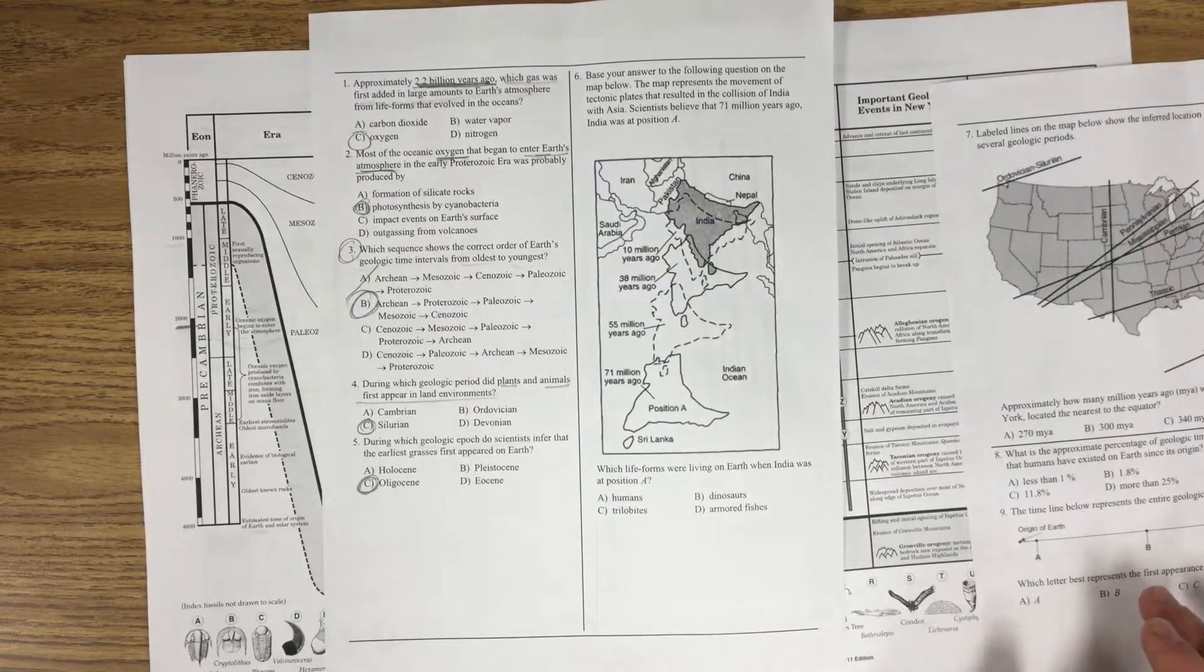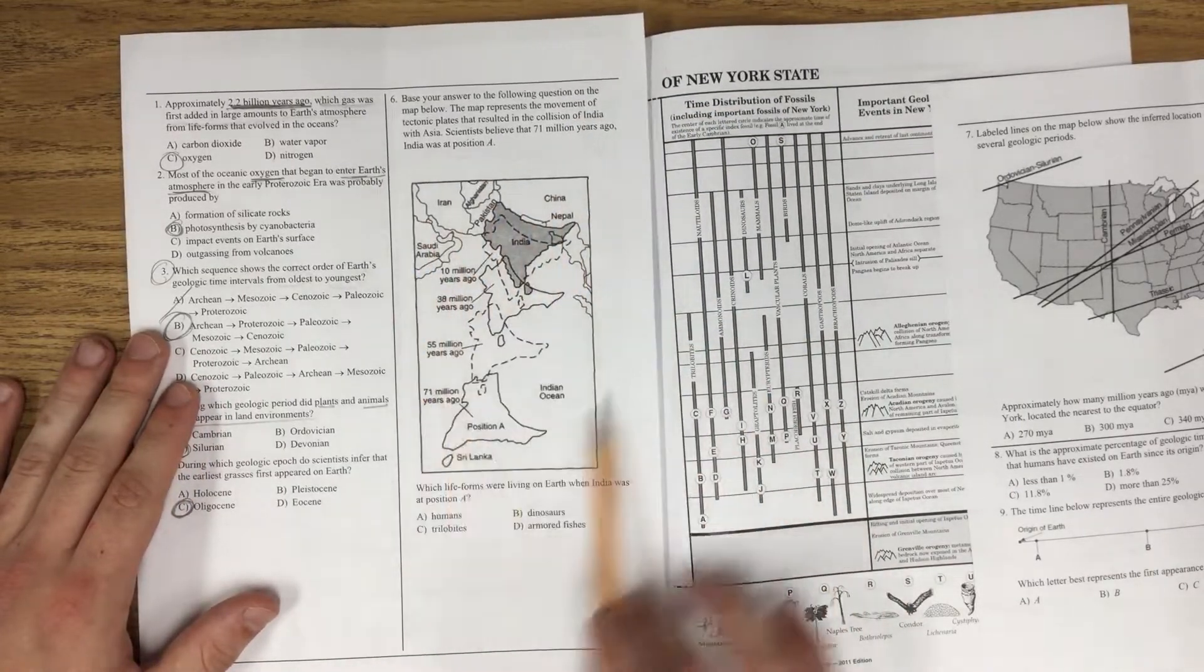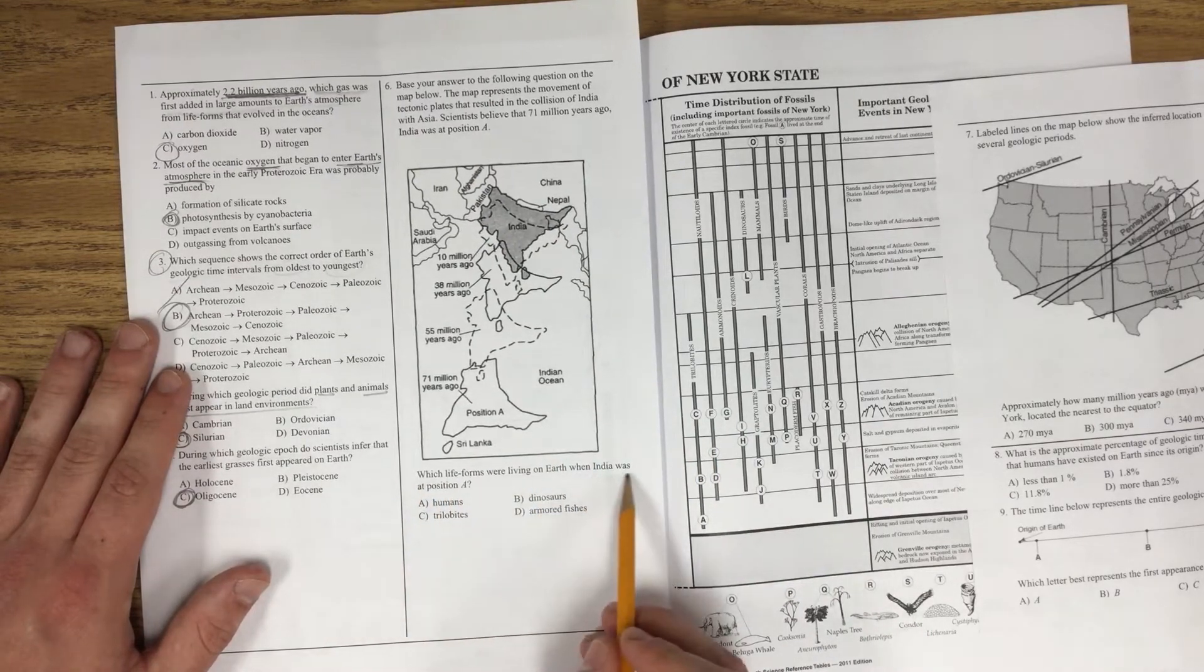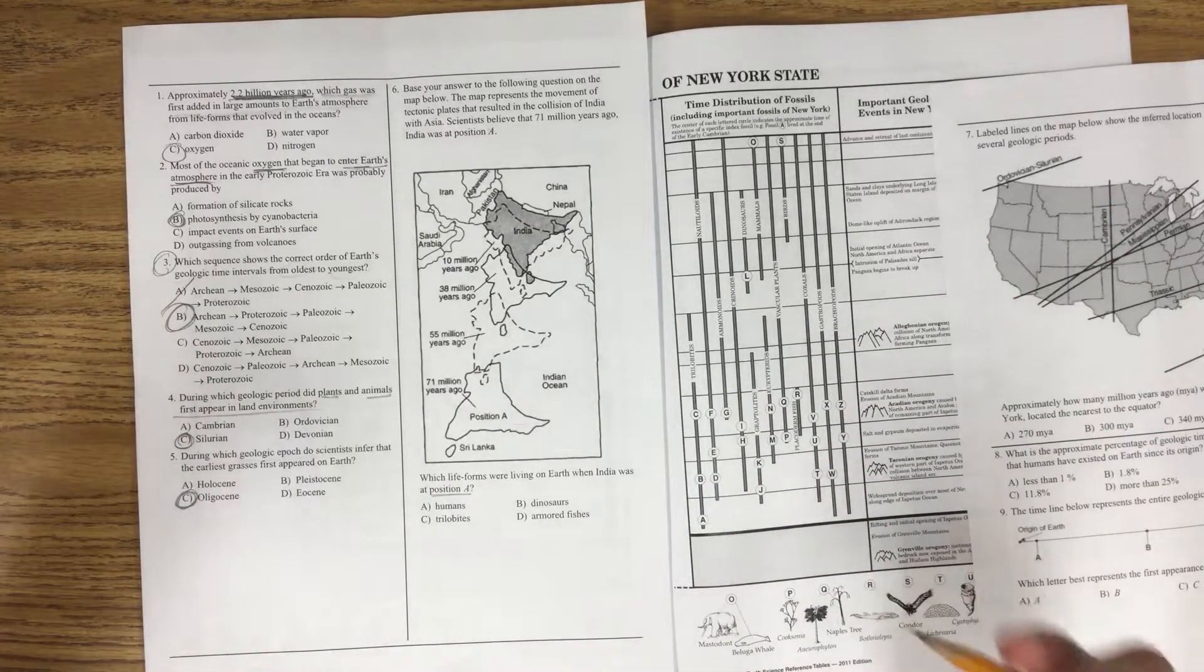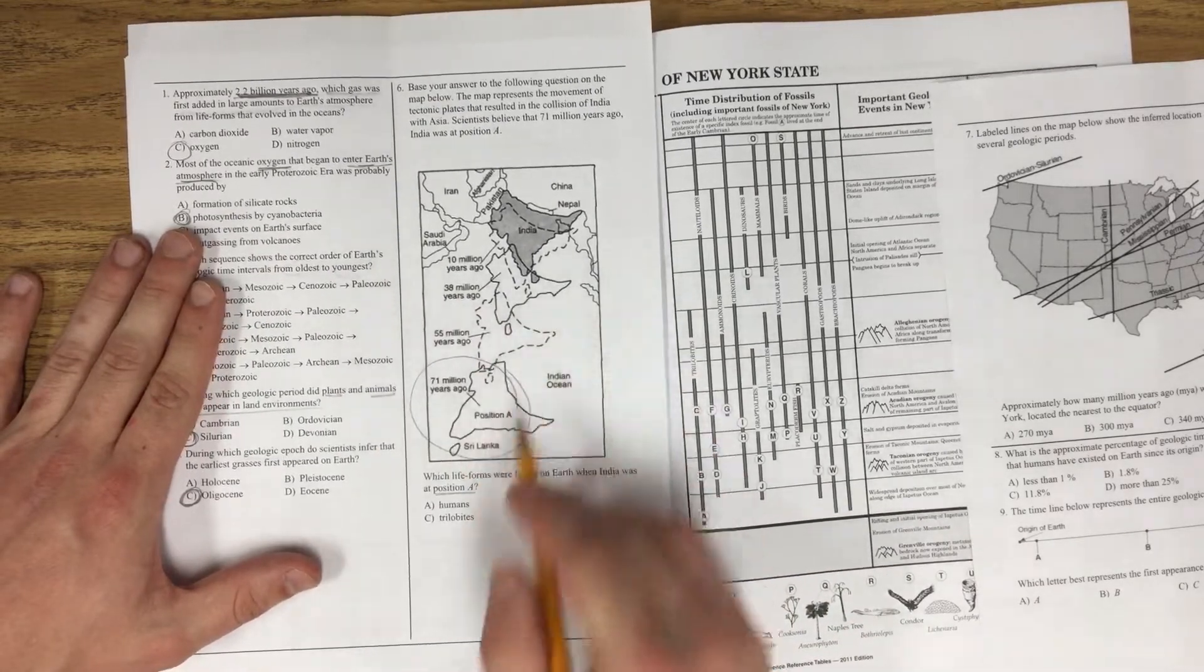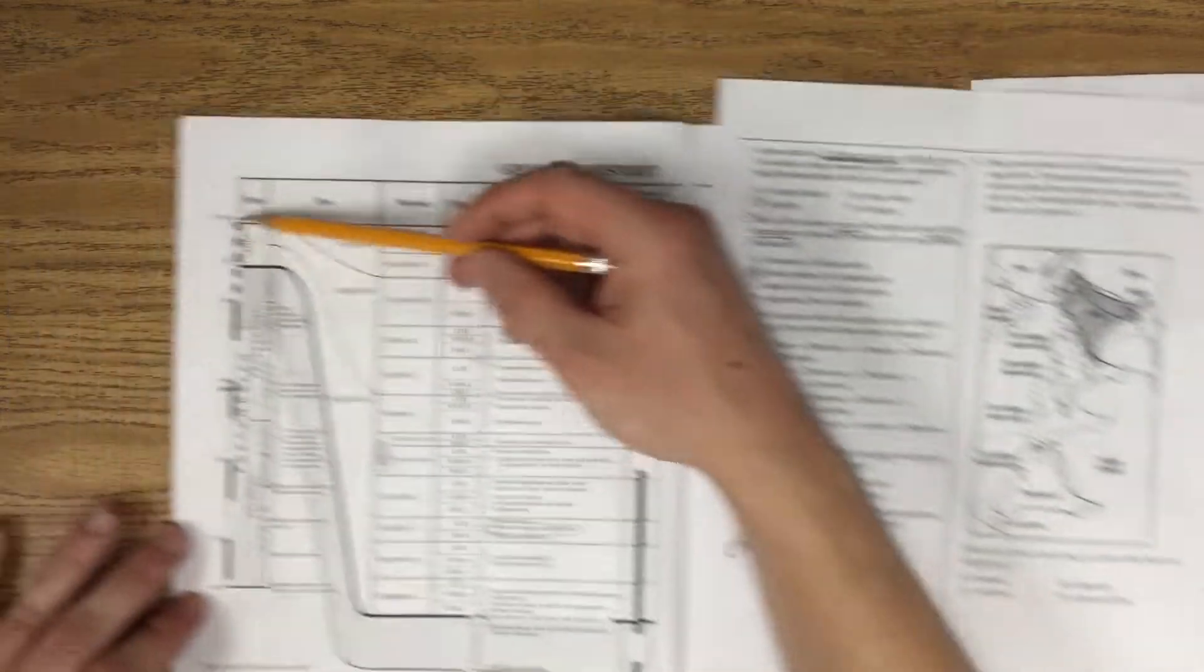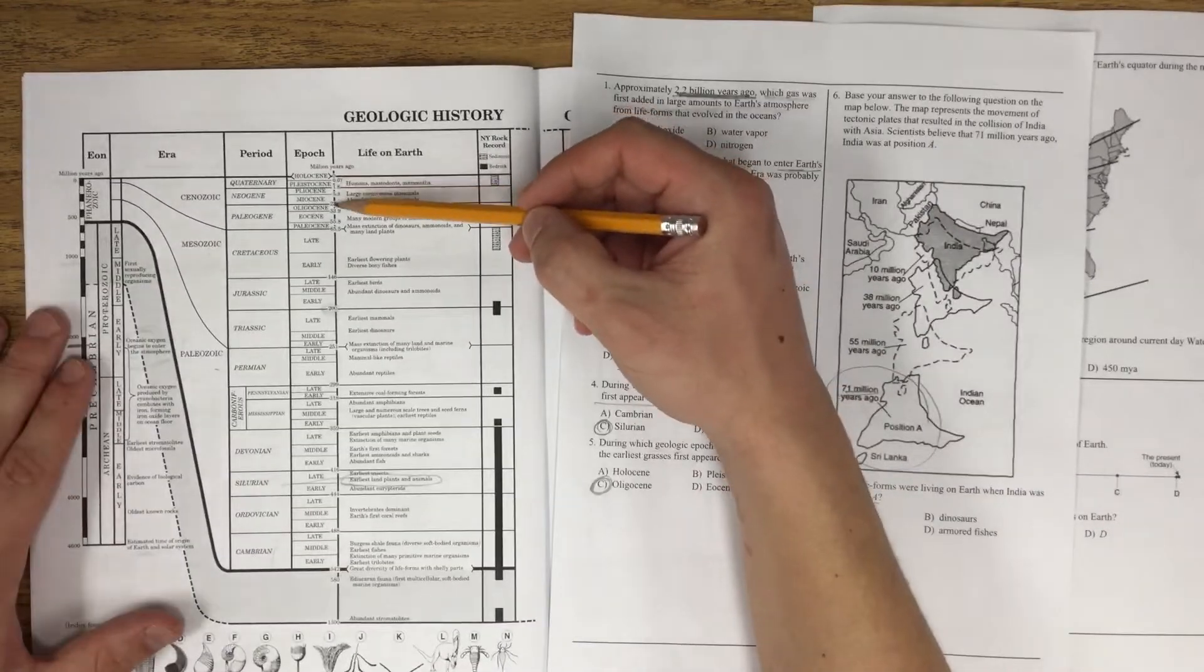Final question I'm going to do with you is going to be this question. So based on this map, we've got to answer this question. Which life forms were living on Earth when India was at position A? So I don't know anything about India. You don't probably really know much about India when it comes down to geology. So position A occurred 71 million years ago. So let's take a look down millions of years. Do I see 71 million years ago on this side here? It's kind of hard to follow. So I'm going to look through this column. 71, 71, 71.